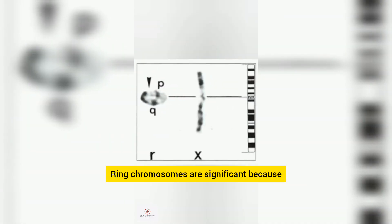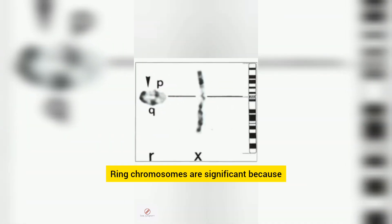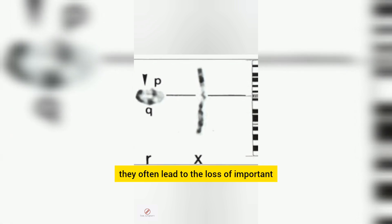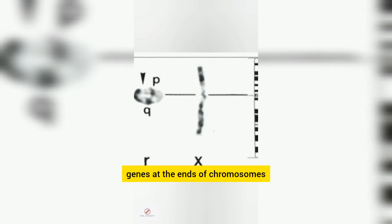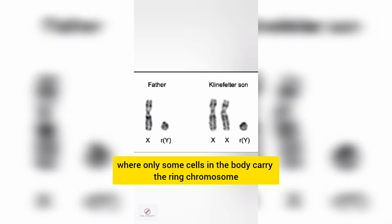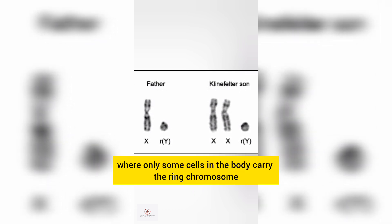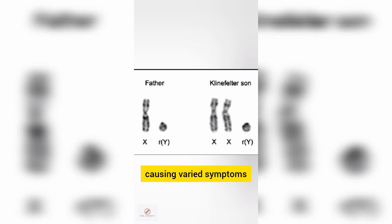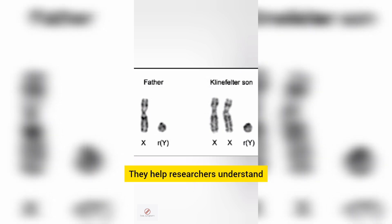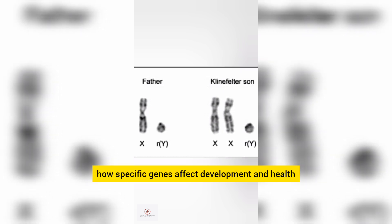Ring chromosomes are significant because they often lead to the loss of important genes at the ends of chromosomes. They can result in mosaicism, where only some cells in the body carry the ring chromosome, causing varied symptoms. They also help researchers understand how specific genes affect development and health.